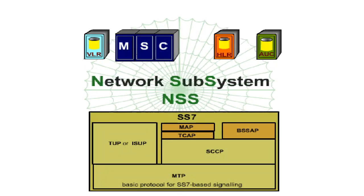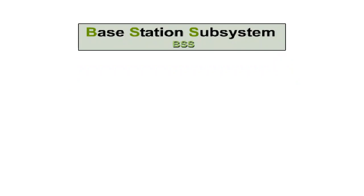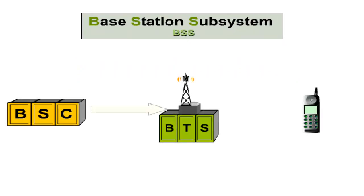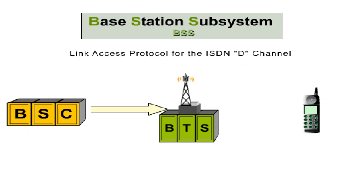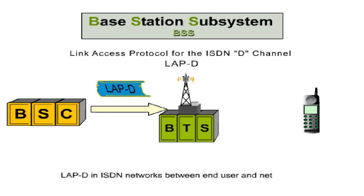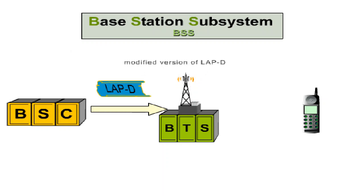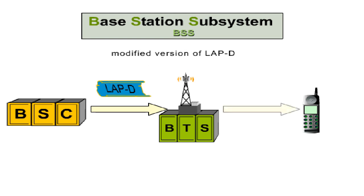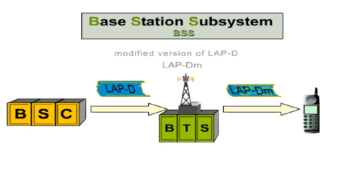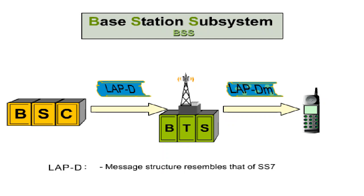Whereas the elements in the network subsystem use SS7, further protocol types are needed in the base station subsystem. The BSC and BTS communicate using the Link Access Protocol for the ISDN-D channel, or LAP-D. This protocol is also used between the end user and the net in ISDN networks. A slightly modified version of the same protocol also exists between the BTS and the mobile station. Due to the modifications imposed by the characteristics of the air interface, the protocol is called LAP-DM. The message structure within LAP-D resembles that of SS7, but it's limited to the support of point-to-point connections.